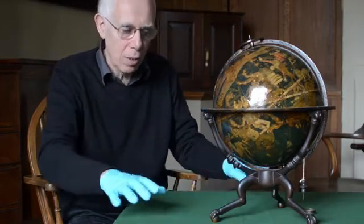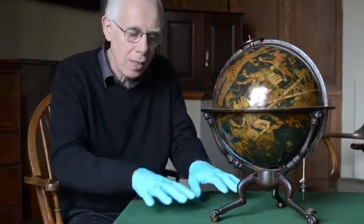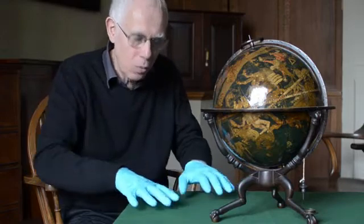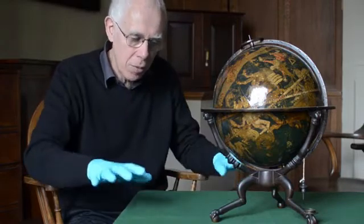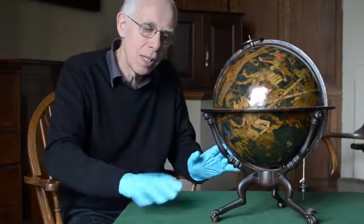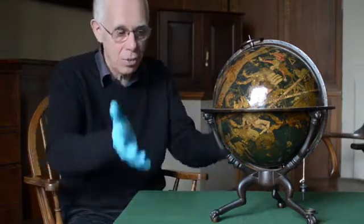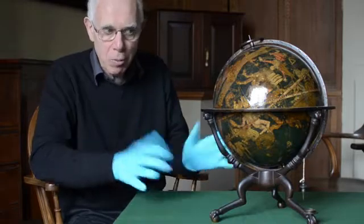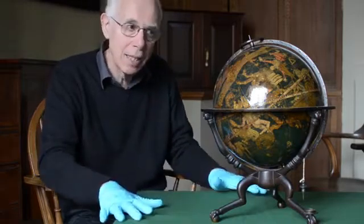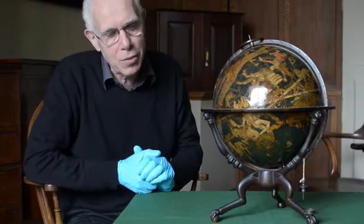So you have a wooden block and you take away the areas of wood that are not going to be printed. You're left with a relief pattern that you can ink and then apply paper to and rub it on and lift it up and you have a printed image. The trouble with that is that it has to be flat, and this is an object that is spherical.